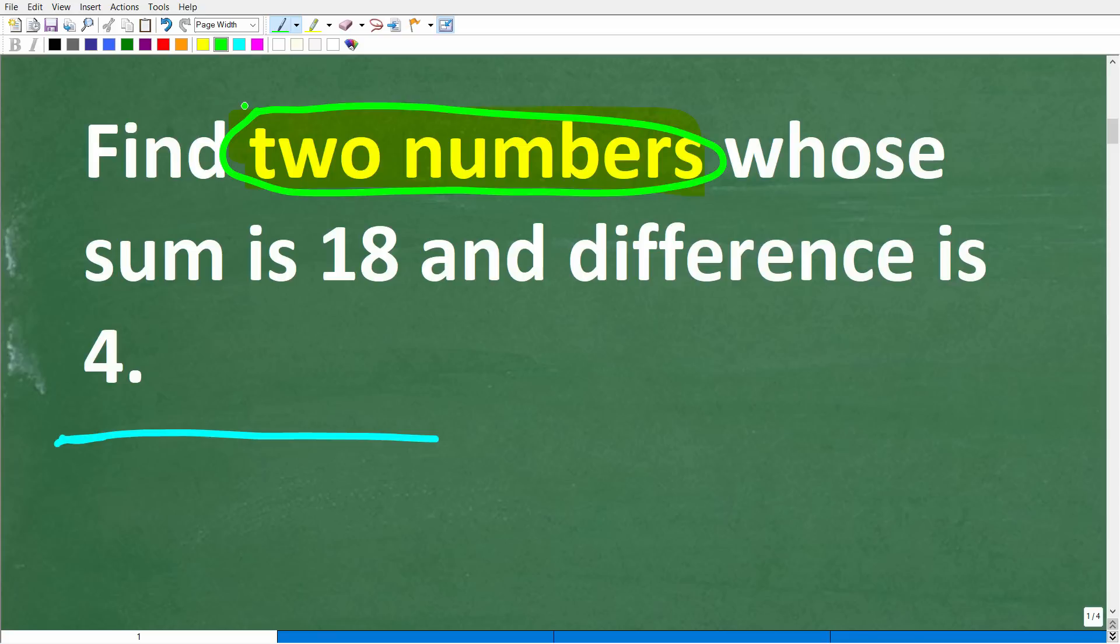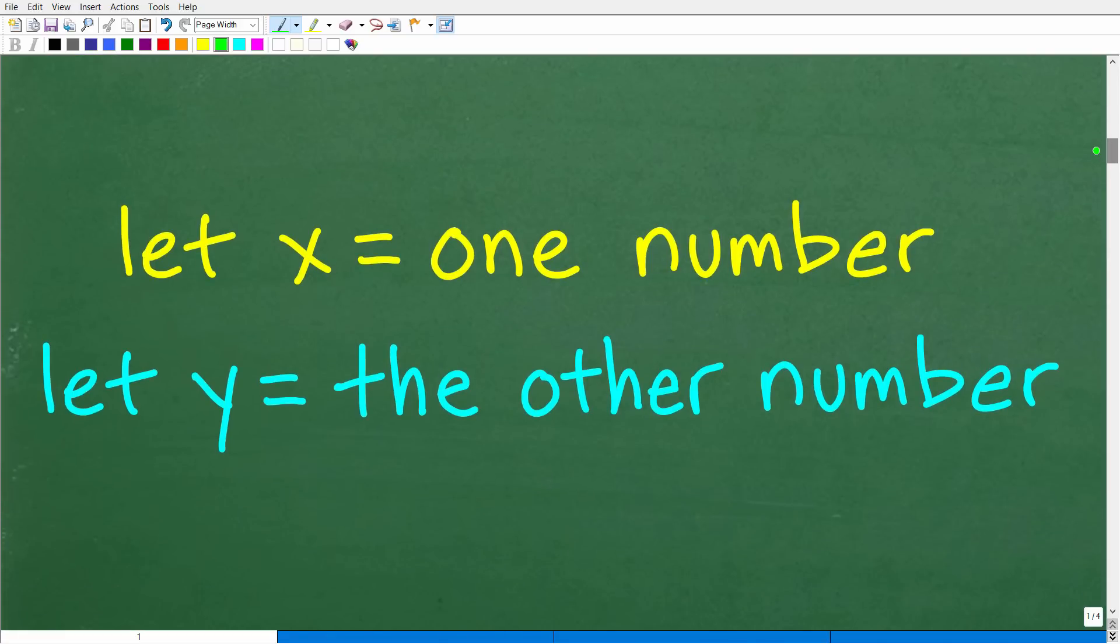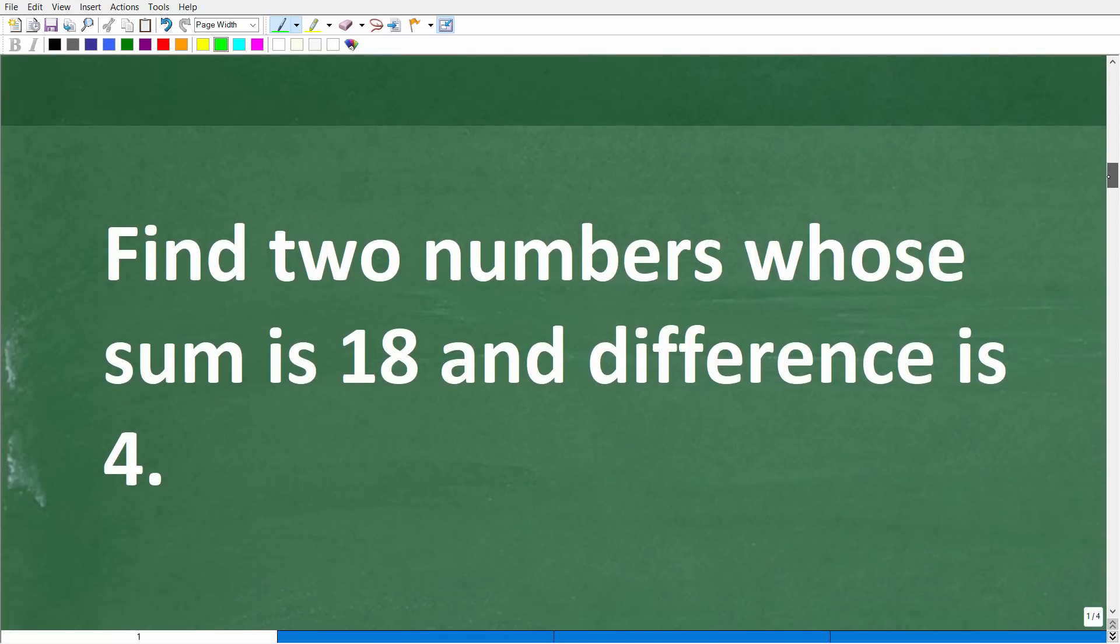We're looking for two numbers whose sum is 18 and whose difference is 4. Remember the sum is when you add up two or more numbers and the difference is when you subtract two or more numbers. So what we can do here is set up two variables that represent these mystery numbers. I'm going to use some simple variables here, x and y. So we'll let x equal one number, and we'll let y equal the other number.